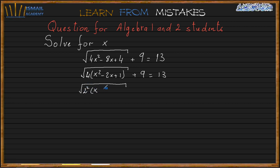So it's going to be 2 squared times x minus 1 squared plus 9 equals 13. So we know that by the property of the square root, if I have square root of a times b is square root of a times square root of b. So I'm going to separate the square root here.